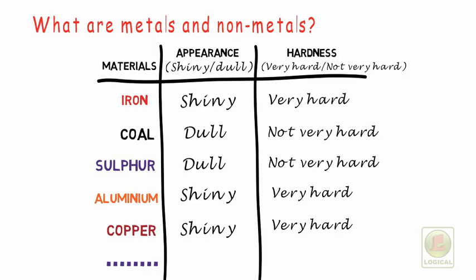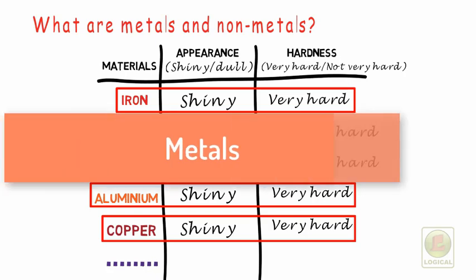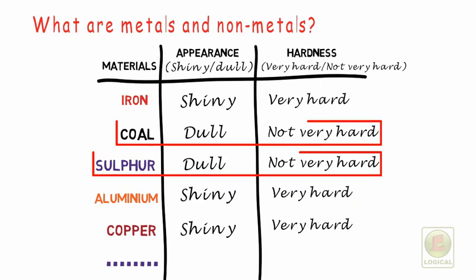Friends, here we can see that iron, aluminum, and copper are shiny and very hard. These materials are metals. The rest of these are non-metals.